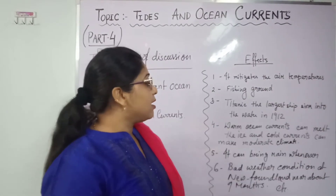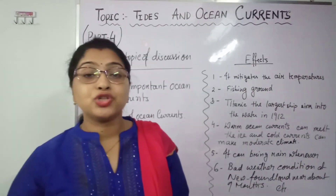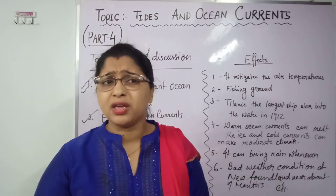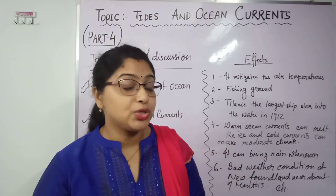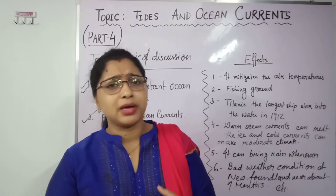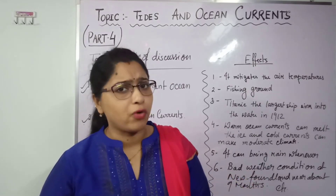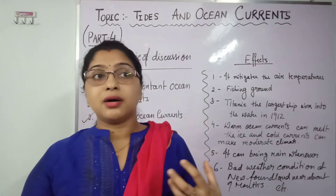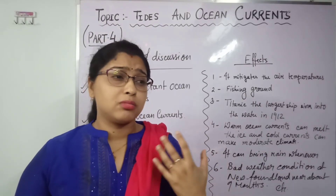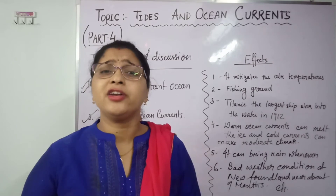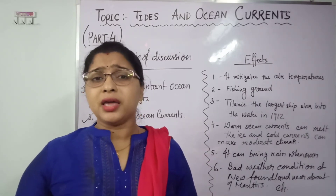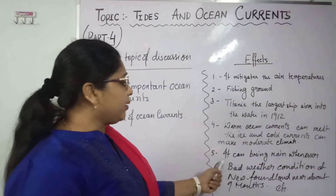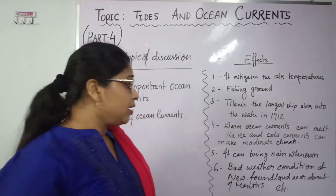Warm ocean currents can also melt ice. For example, the Kuroshio Current along the eastern coast of Japan means that in January there is no snowfall in Hokkaido and Honshu because of this warm current's influence. Cold currents passing near high-temperature land areas can also moderate the temperature, making it more suitable for habitation — as seen in areas like the UK and other parts of Europe.